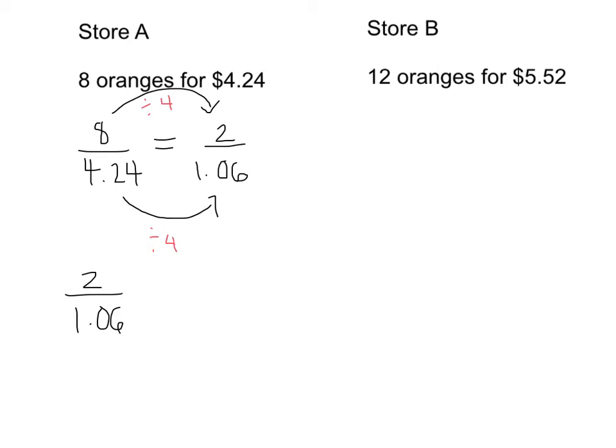We still haven't answered the question. The question asked us how much did it cost for 30 oranges so that we can compare the value. The reason we use 2 is because we know that we can multiply 2 by a whole number to get to 30. We need to figure out what that whole number is.